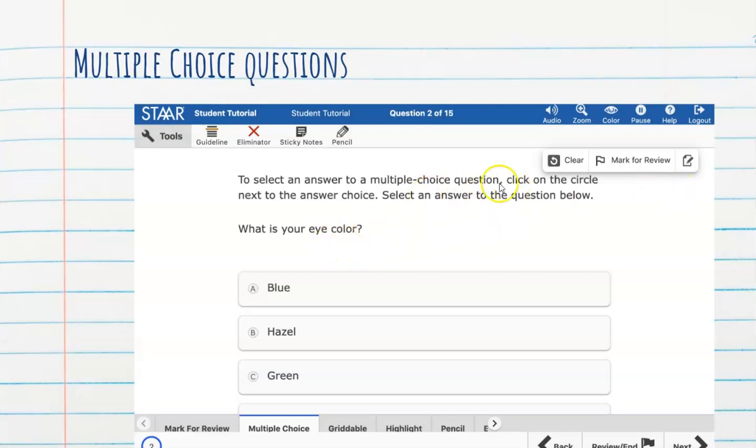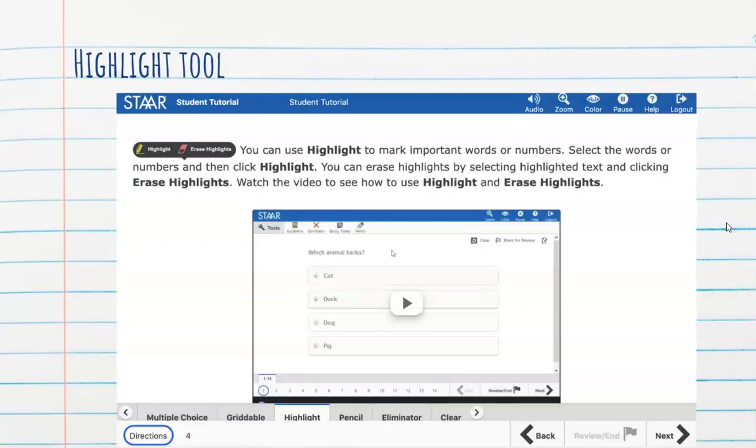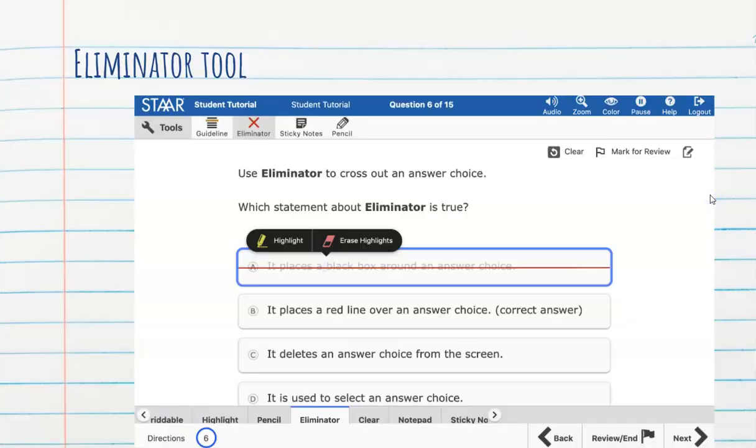Anytime you want to click a multiple choice, just click on the circle simply that you believe is the correct answer on it. There's also something here that gives you the highlight tool. That's part of your tools here. And any student has the access to highlight something. So, for example, if there was a passage and you wanted to highlight something, you can do that. You can also erase the highlights anytime that you want to.